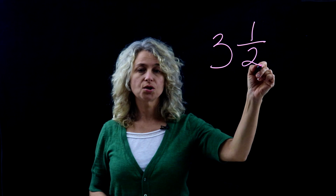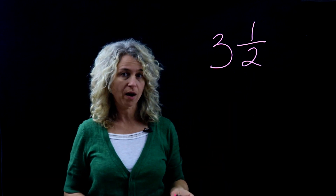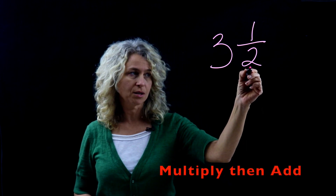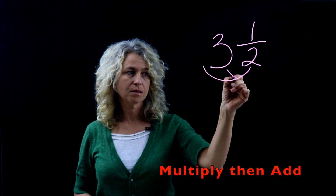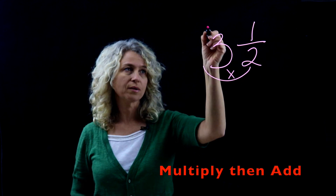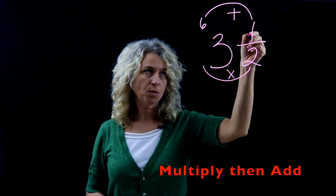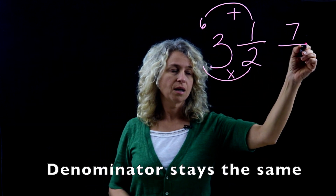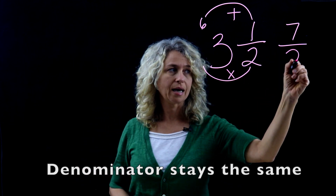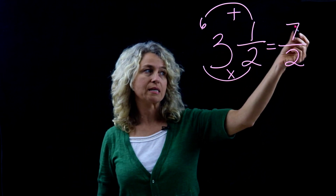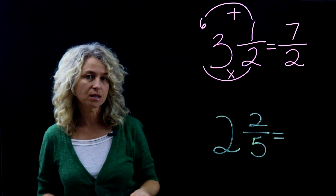Today we're going to learn how to change a mixed number like three and one-half to an improper fraction. It's a very simple method. The first thing you do is multiply 2 times the whole number 3 — 2 times 3 is 6 — and then add 6 plus the numerator to get 7. Your denominator will just stay the same. So 3 and 1 half equals 7 halves.